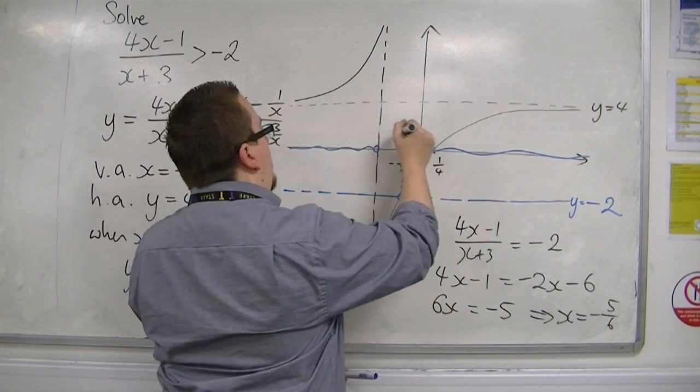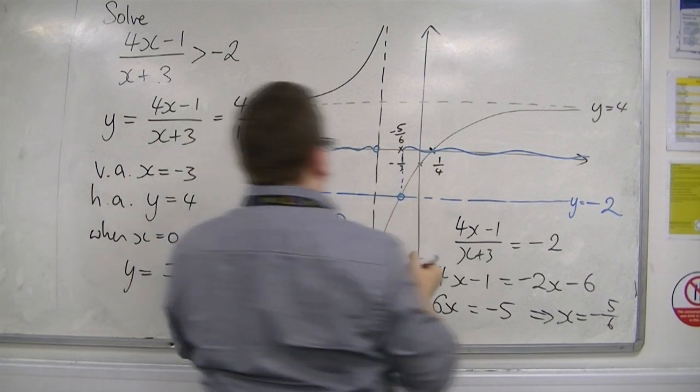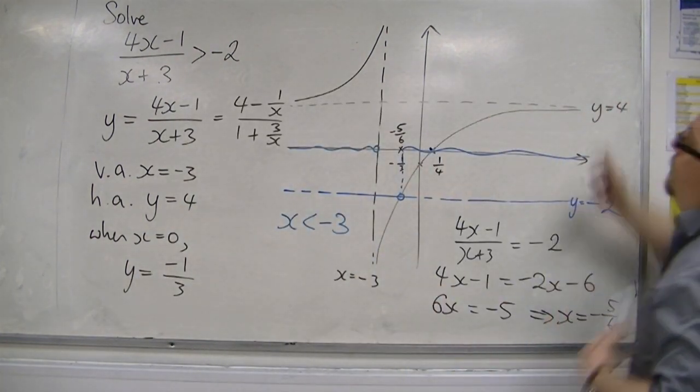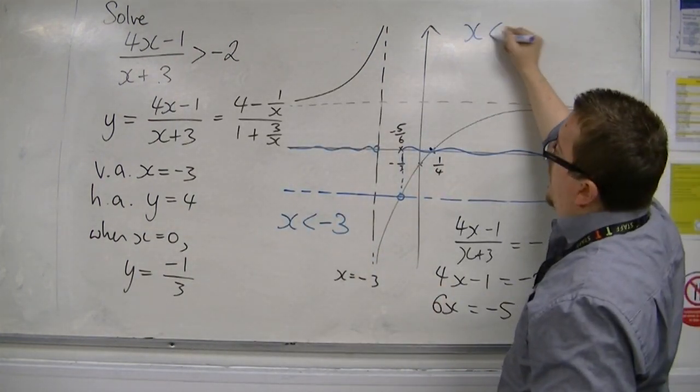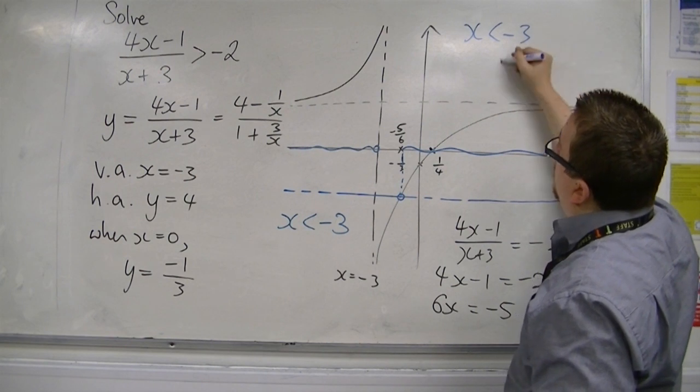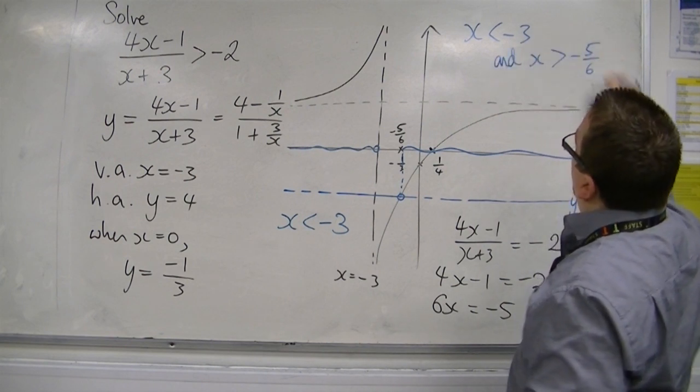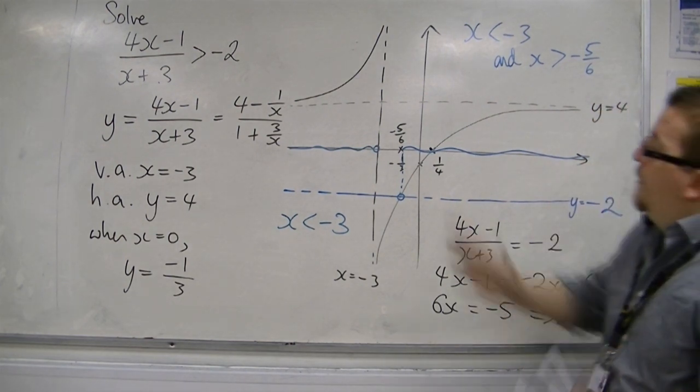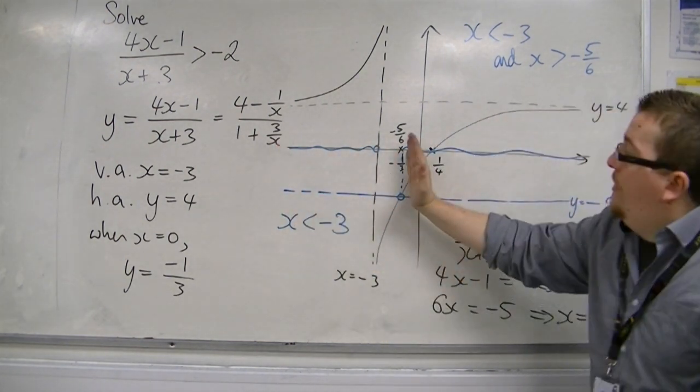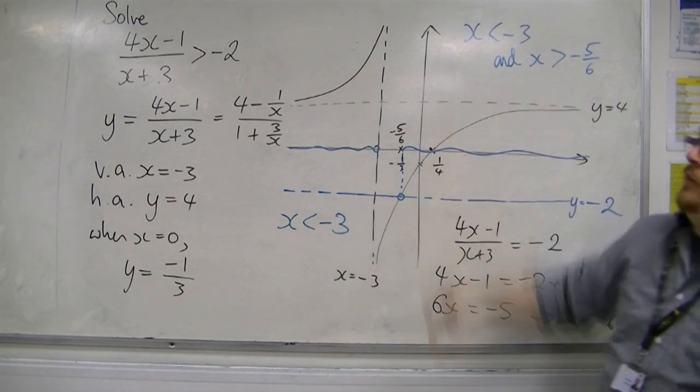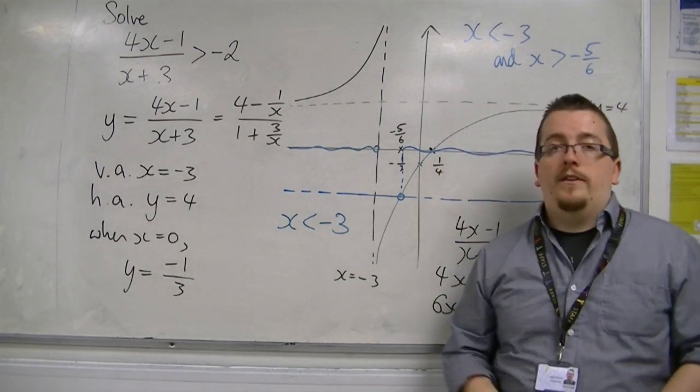So that value there is minus 5 over 6. And so, the solution to the inequality is x is less than minus 3, and x is greater than minus 5 sixths. Okay, so it's that portion there, and that portion there. And that's how we can solve an inequality like this.